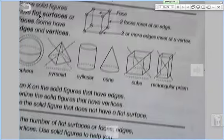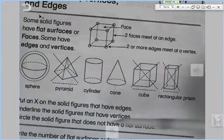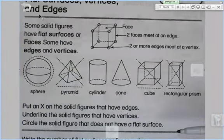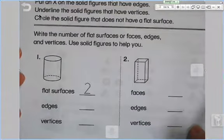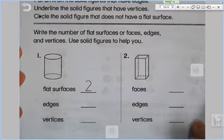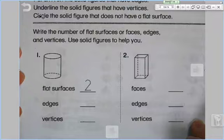Let's flip it over. The back is even easier. Up here, they're showing you the shapes. They went ahead and they kind of did it for us, so we're going to skip that part. We're going to get straight to work on number 1 and 2. Write the number of flat surface or faces, edges, and vertices. Use the solid figures to help you.